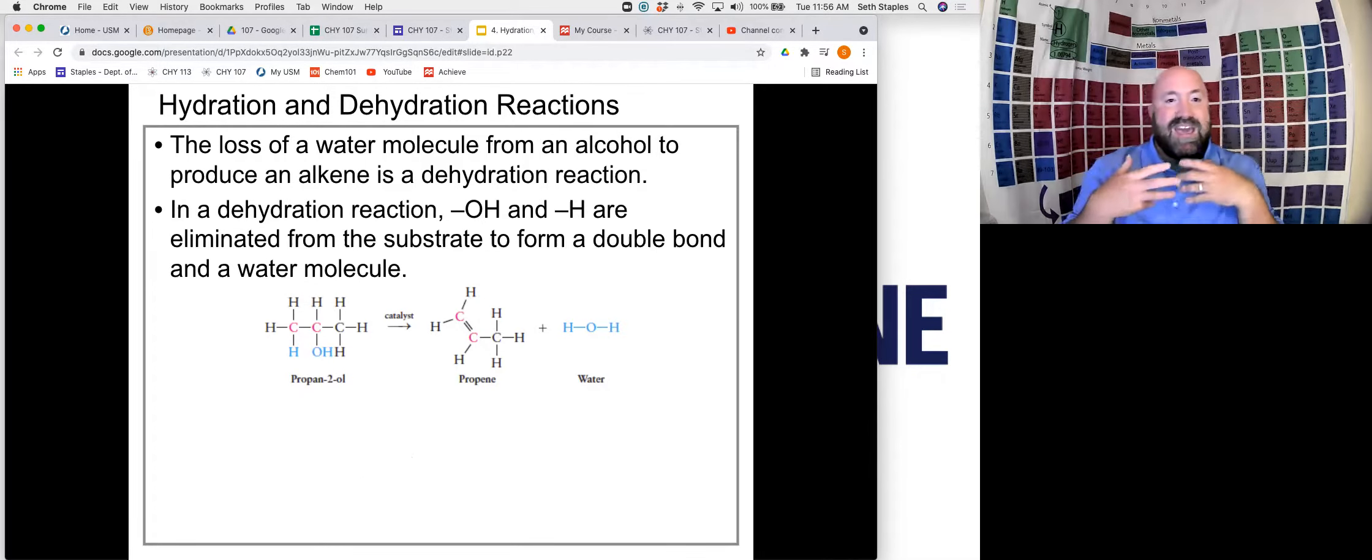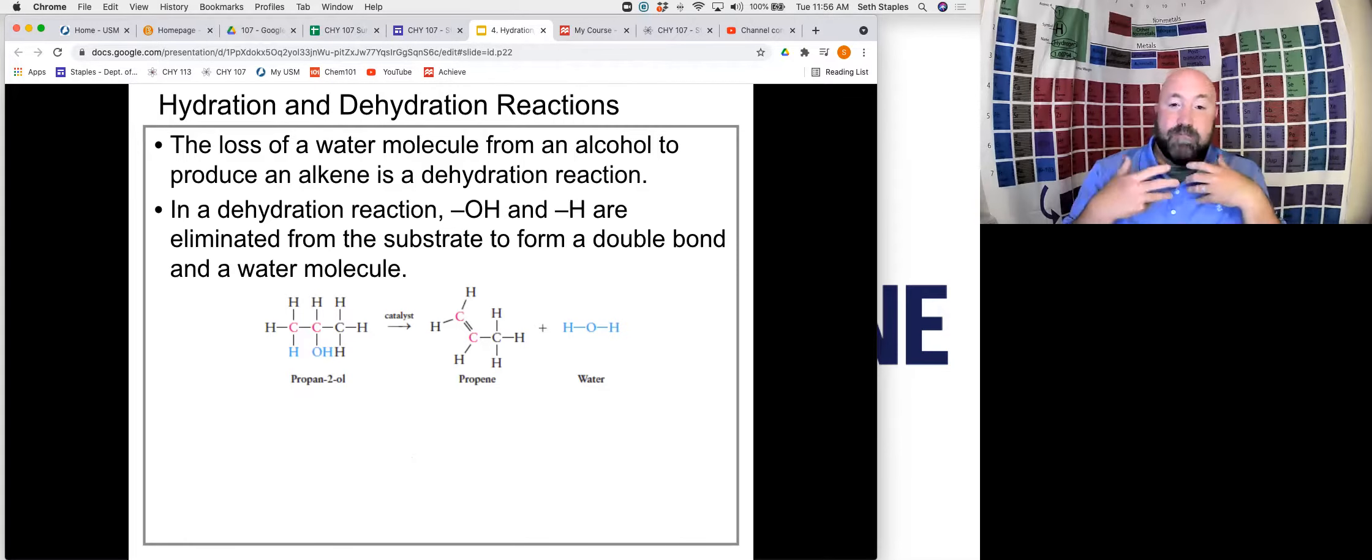So as you might predict, a dehydration reaction, just the opposite. In a dehydration reaction, here we have our alcohol. And what happens there is that water is removed. And so when the hydroxyl group is removed, so is a hydrogen from an adjacent carbon. And then that gets kicked out as water, but then a double bond forms between those two carbons in order to form our alkene. So we end up with an alkene and a water molecule as products of this reaction.